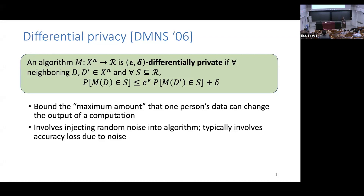So this is our nice notion of privacy, but the question is how do we achieve it? Can we achieve it? This notion works algorithmically by injecting random noise into the algorithm. The core of what we explore today is precisely how does that noise work, how does it affect accuracy of our results? If I'm telling you to first optimize and then perturb the results, all of a sudden you're no longer optimal — should you be concerned, and if so, how concerned? That's the theme of the hour.